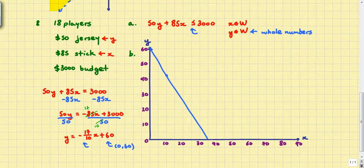We do need to test the point. I'm going to test the point (0, 0) because it is not on the graph proper. You want to test against the original inequality that you've made up in part A. Here's 50 times 0 plus 85 times 0. 0 is less than or equal to 3,000, and that is true. So I'm going to shade on the side that (0, 0) is on, which is this side.